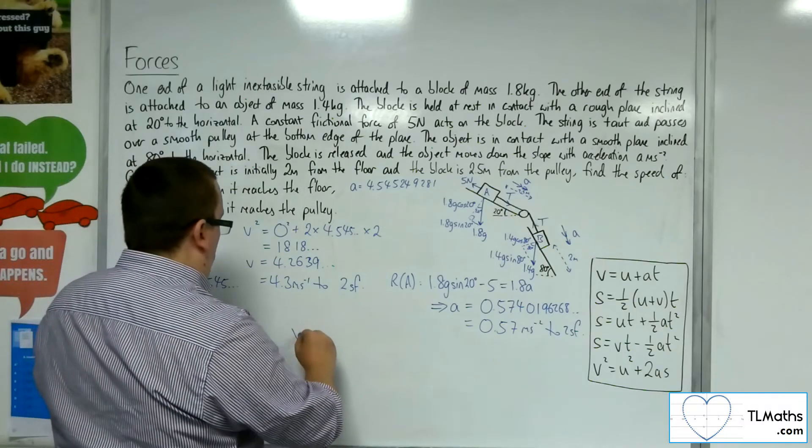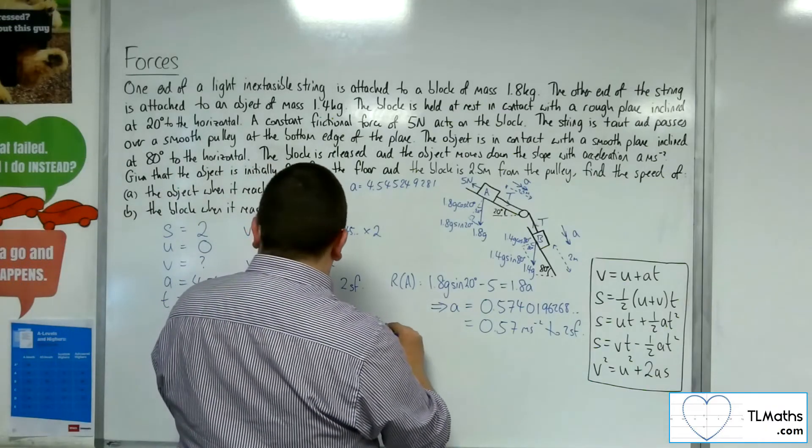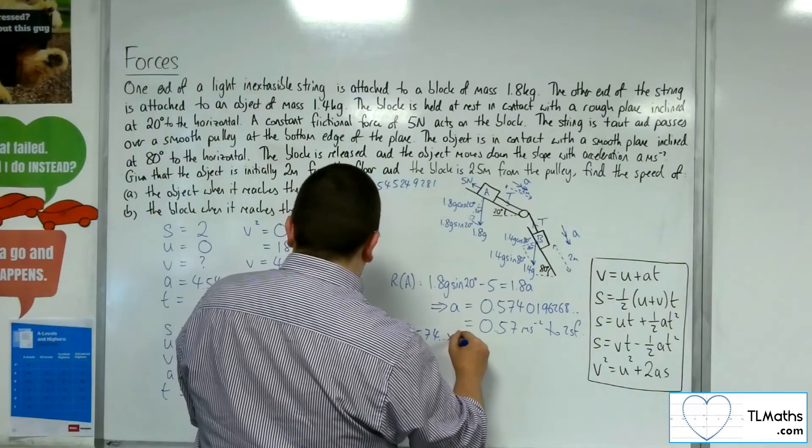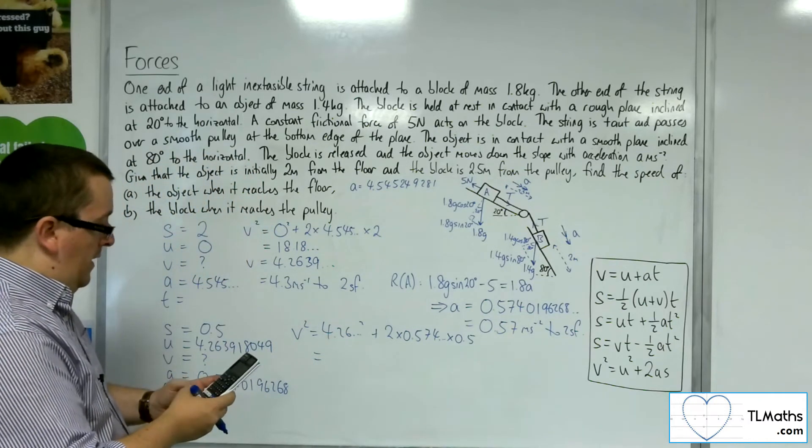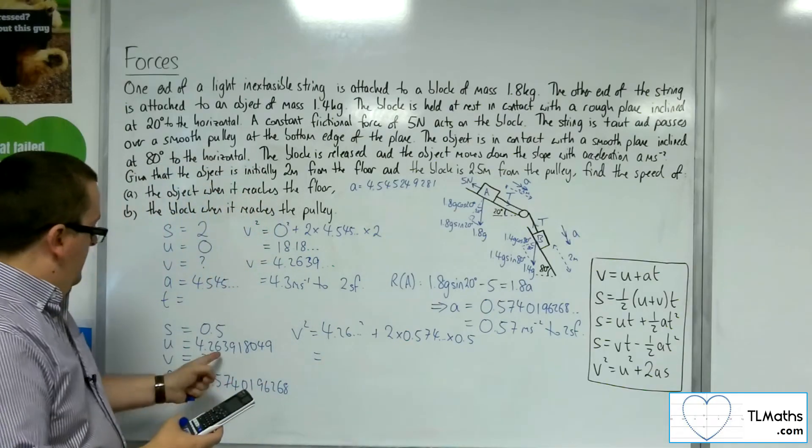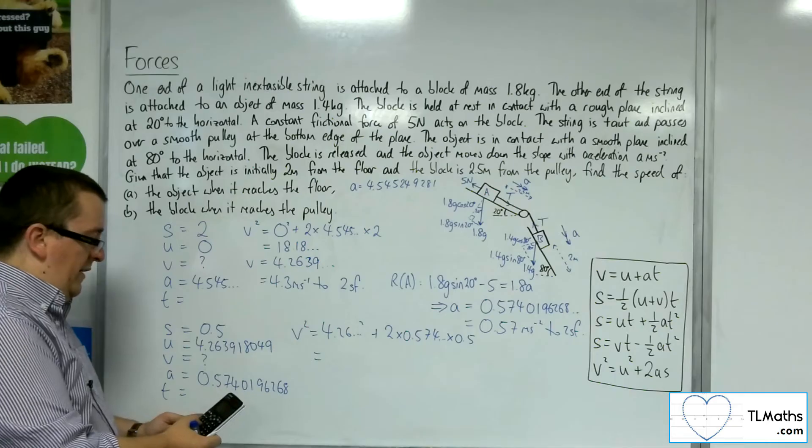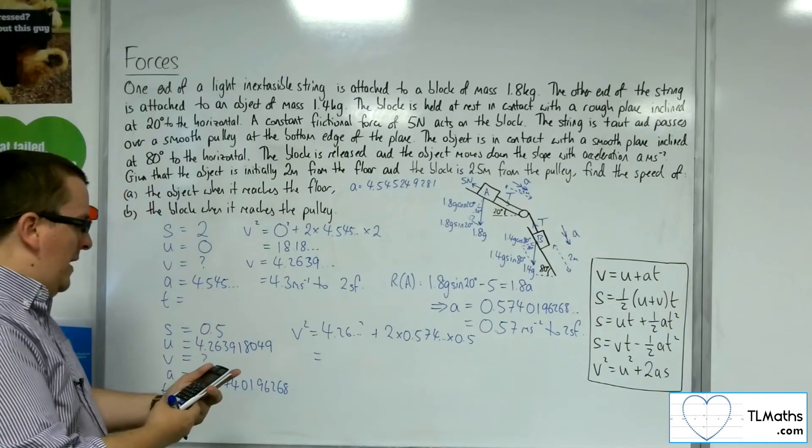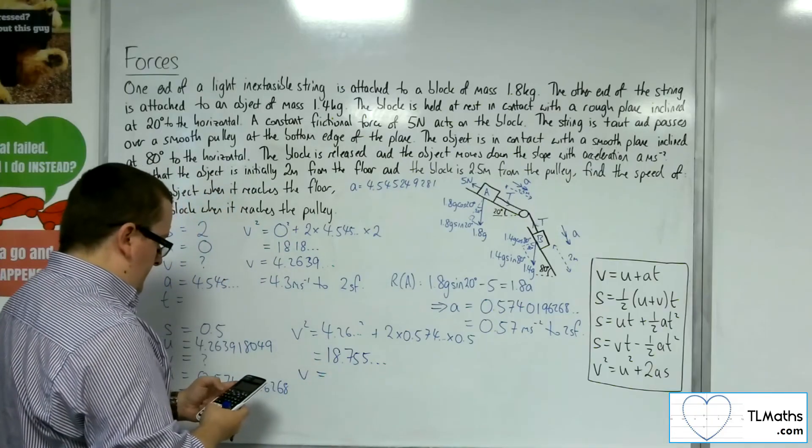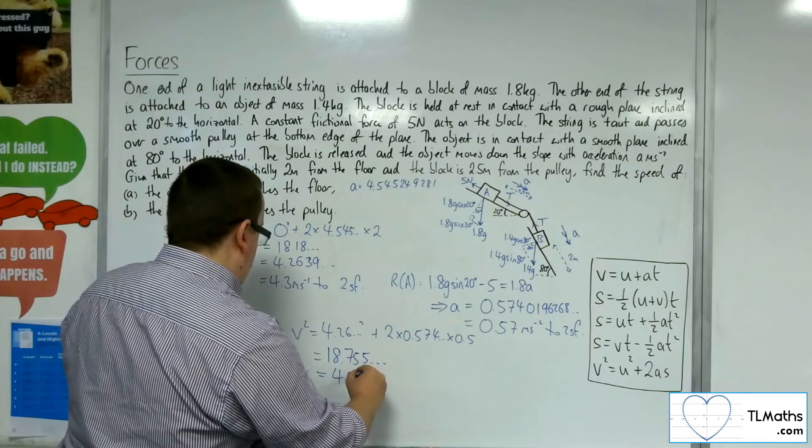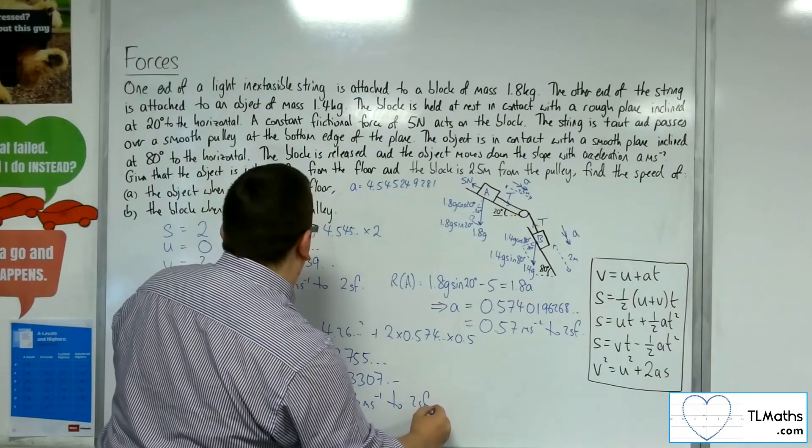V squared equals U squared plus 2AS. So plus 2 times 0.574 times 0.5. Now I've got to add on this squared: 4.263918049. I wrote down the full calculator display for this purpose. Square that and I get 18.755, etc. Square root that answer and I get 4.3307, so 4.3 meters per second to 2 sig fig.